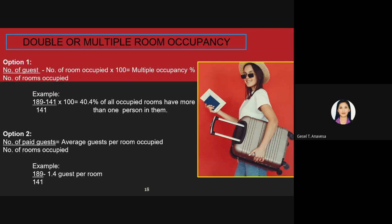Option two: number of paid guests divided by the number of rooms occupied equals the average guest per room occupied. Using the same example: 189 divided by 141 equals 1.4 guests per room.